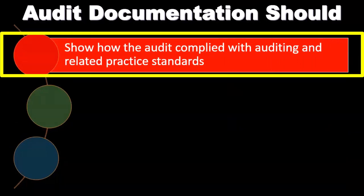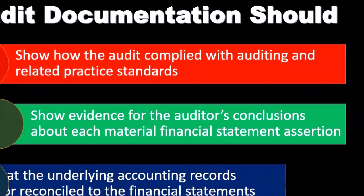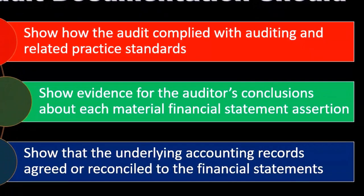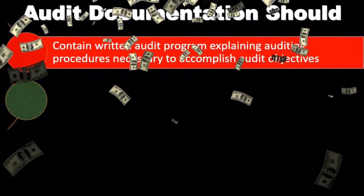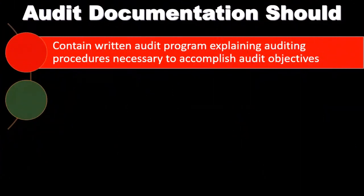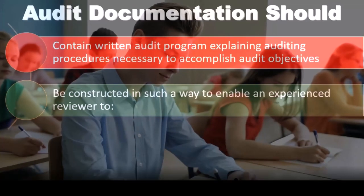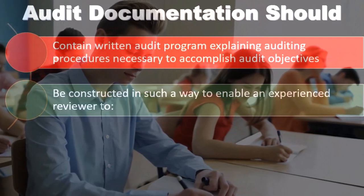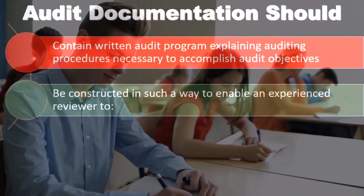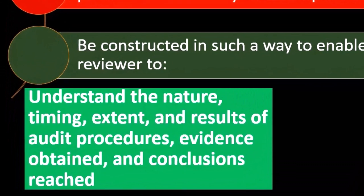Audit documentation should show how the audit complied with auditing and related practice standards, show evidence for the auditor's conclusion about each material financial statement assertion, show that the underlying accounting records agree or reconcile to the financial statements, and contain a written audit program explaining the auditing procedures necessary to accomplish audit objectives. It also has to be constructed in such a way to enable an experienced reviewer to understand the nature, timing, extent, and results of the audit.